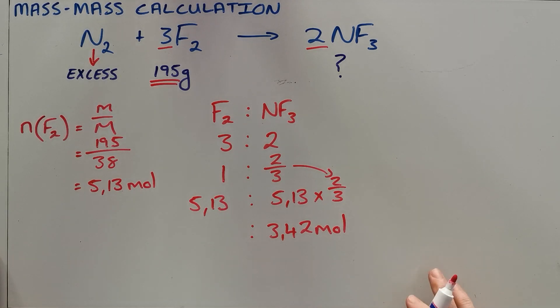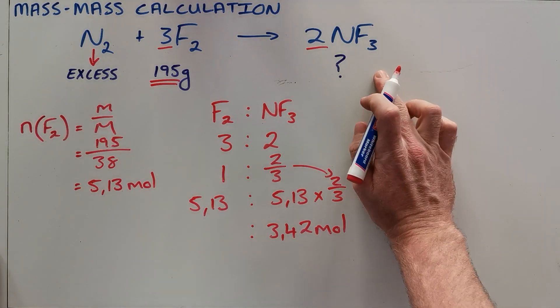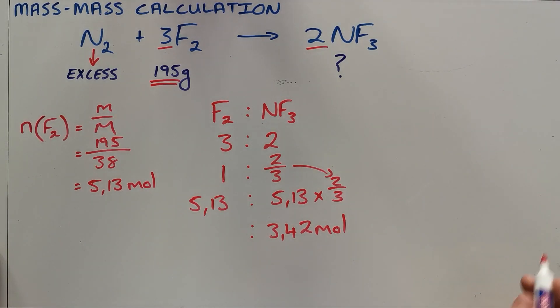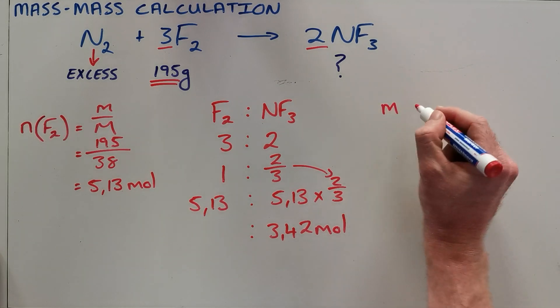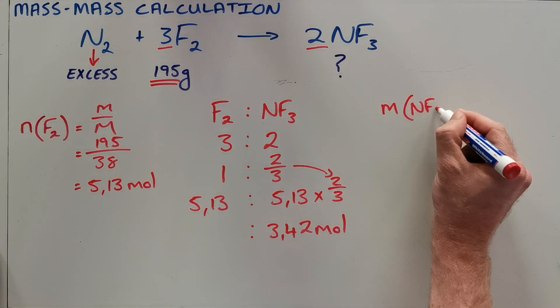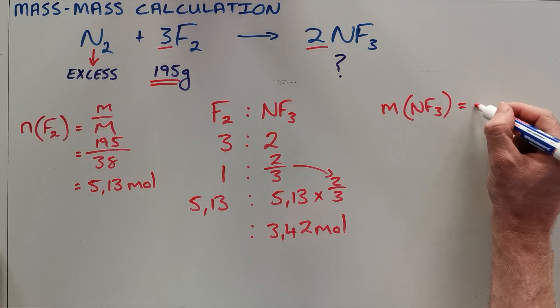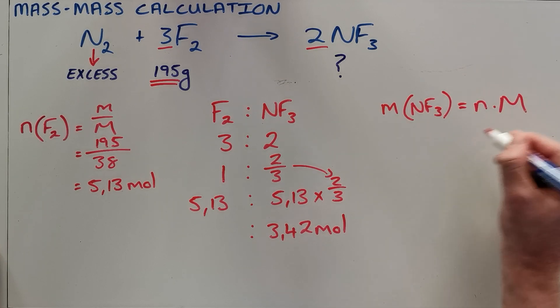The last step here is, because the question asked for what mass of nitrogen trifluoride has been formed, we convert that into a mass by saying our mass of NF3 is equal to the number of moles multiplied by the molar mass.